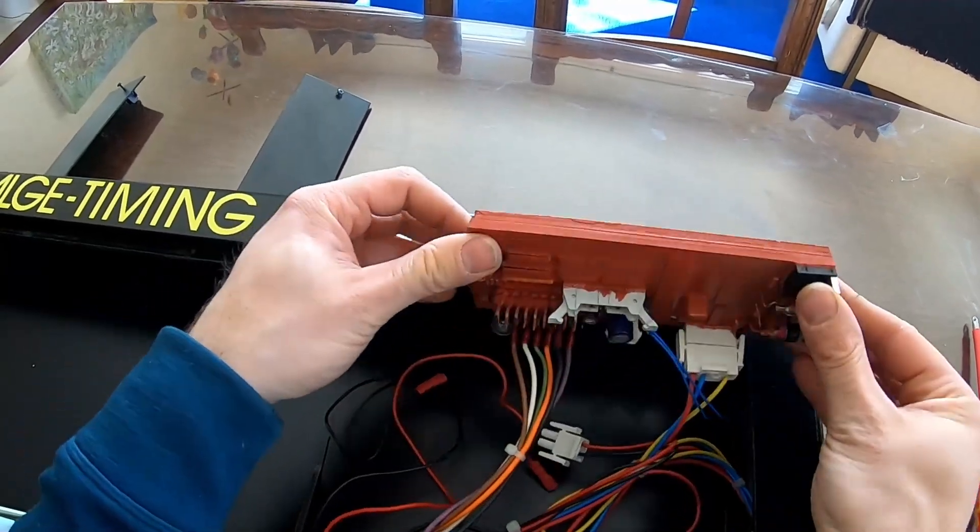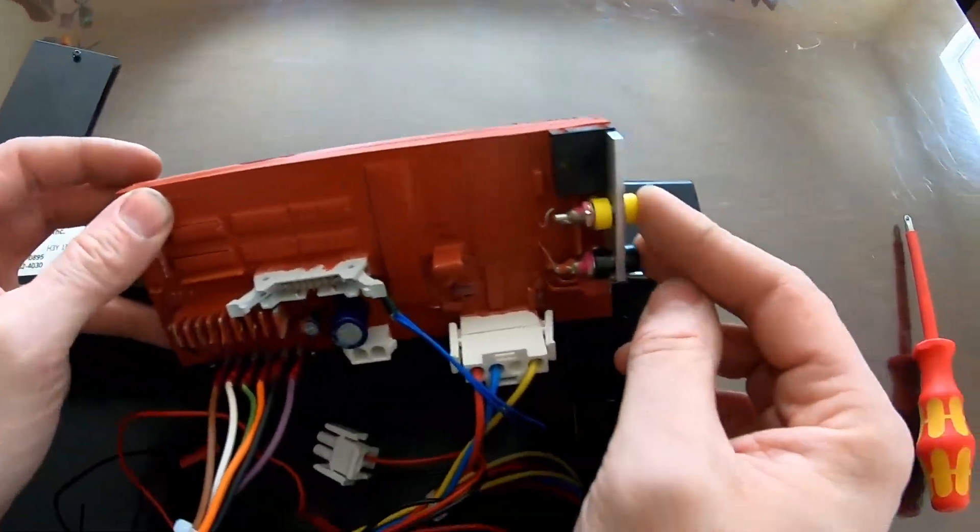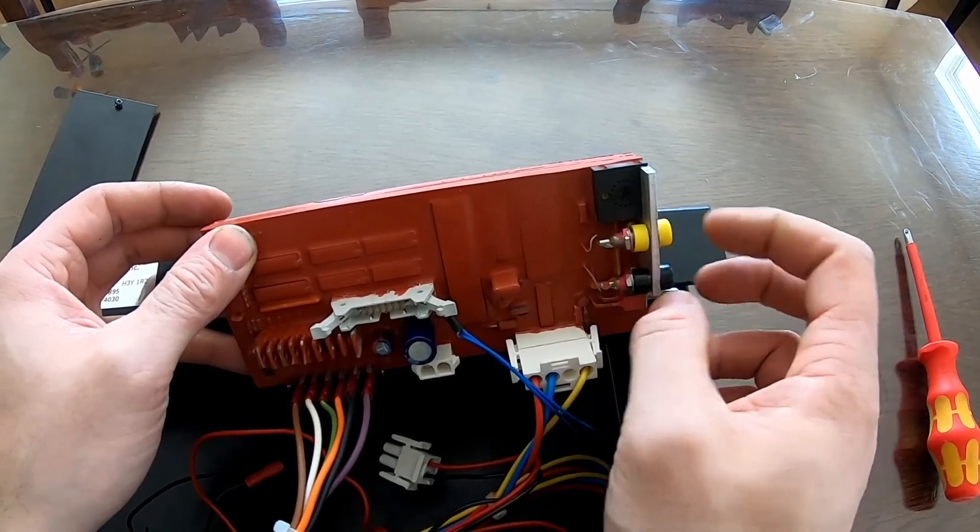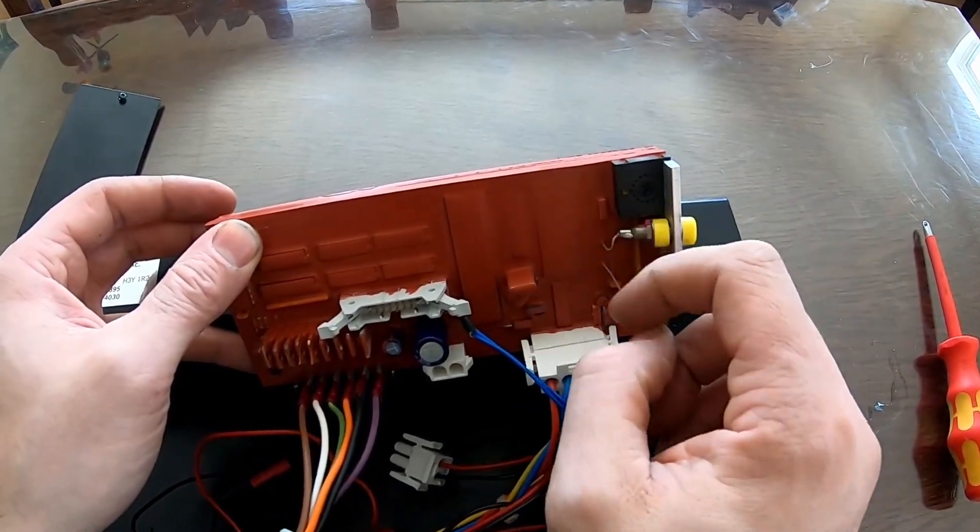So then with those two nuts and that Phillips head screw removed the board will come out. It's gonna be a lot easier to work on. Yeah there's our problem right there. So you can see that the jacks for the plunger are no longer connected to the board.